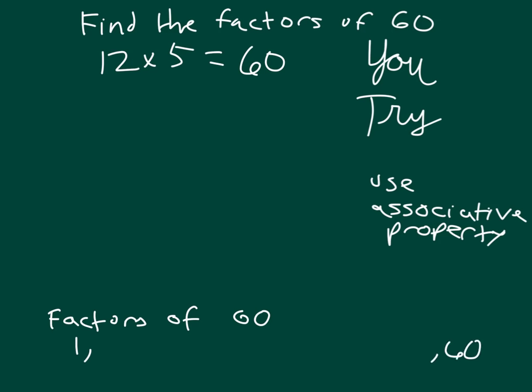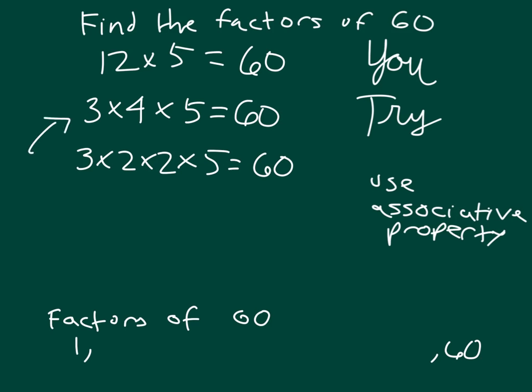Start with 1 and 60 for sure. Alright, so 12—well, let's see—3 times 4 gives us 12, so 3 times 4 times 5 does give us 60. I also know that 4 can be rewritten as 2 times 2. So we have this here. Let's start right here with the 3 times 4 times 5, and we'll associate 3 times 4 to give us 12. So that's 12 times 5 equaling 60.